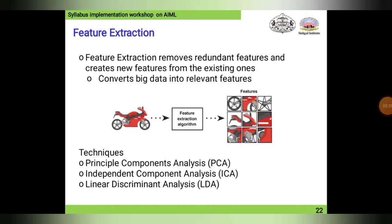Feature extraction removes redundant features and creates new features from existing ones, converting big data into relevant features. In the figure shown, a bike is used as an example for a feature extraction algorithm, which extracts features such as tires, wheel rims, bonnet, and handles — various parts of the bike. For feature extraction, we use PCA (Principal Component Analysis), ICA (Independent Component Analysis), and LDA (Linear Discriminant Analysis).